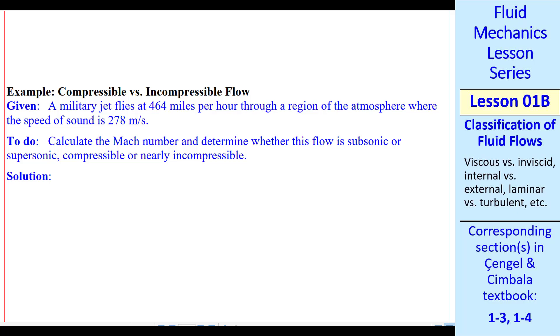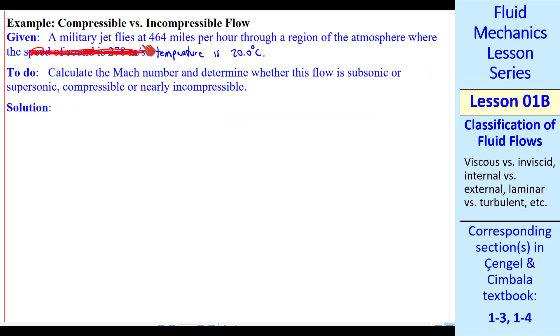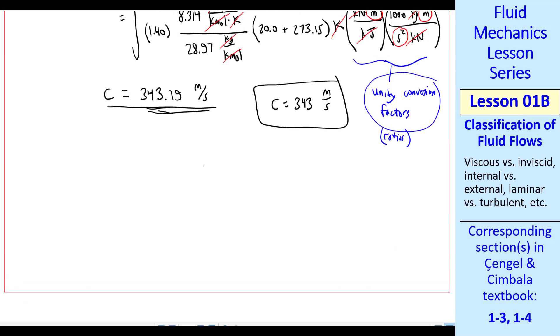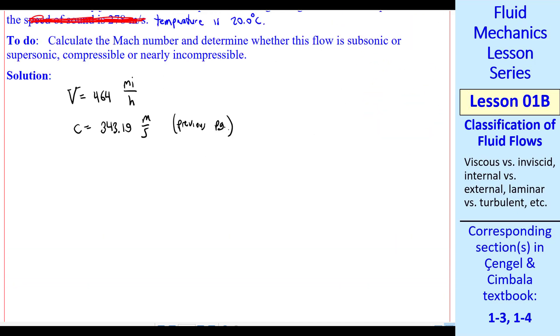Now we can do another example with Mach number. In this example, we have a military jet flying at a certain speed in miles per hour through the atmosphere. This is air where the temperature is 20 degrees C. We want to calculate the Mach number and determine whether this flow is subsonic or supersonic and whether it's compressible or nearly incompressible where we can ignore compressibility. V is 464 miles per hour. C is 343.19 meters per second. And this comes from the previous example, since it's at the same temperature. So that's the previous page.